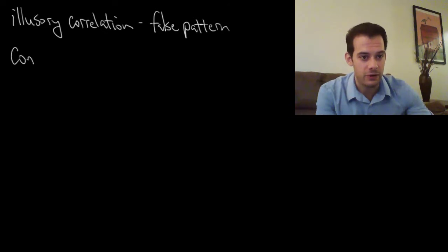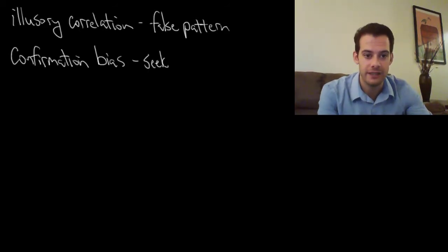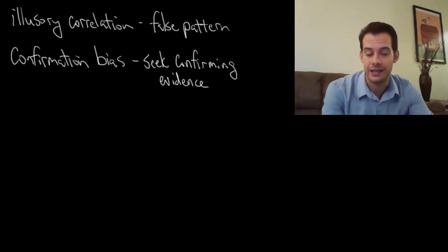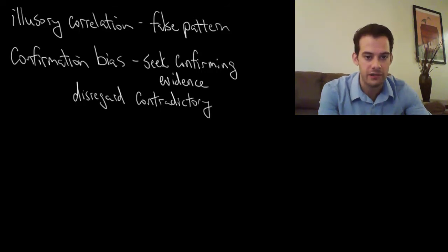This is a bias known as confirmation bias. Confirmation bias is the idea that when we think we have a pattern we start looking for examples of it. We seek confirmation. So we start seeking out confirming evidence. I'm going to start thinking of other times I was wearing this shirt and I did well on an exam. That's going to make me more convinced that this pattern is real. And along the way I'm going to start disregarding things that don't fit.